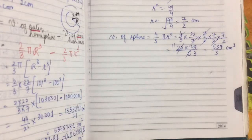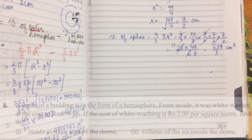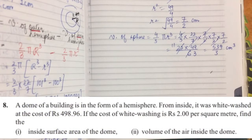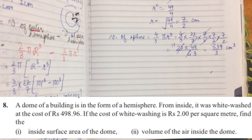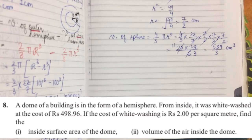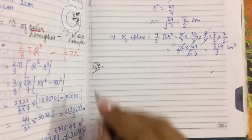Question 8: a dome of a building is in the form of a hemisphere — think of the Taj Mahal. From inside, it was whitewashed at a total cost of ₹498.96 paise. The cost of whitewashing per meter square is ₹2. Find the inner surface area of the dome and the volume of air inside.